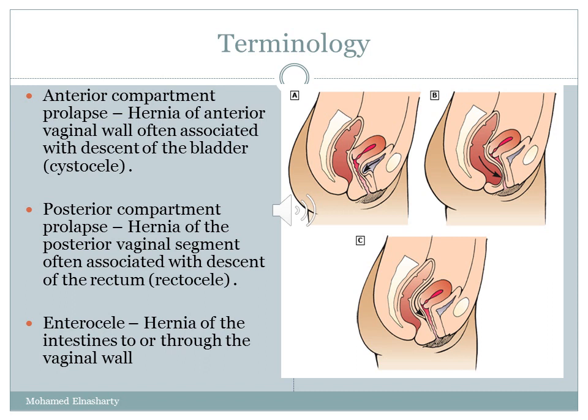Terminology is based on compartment. We have anterior compartment prolapse, posterior compartment prolapse, apical prolapse, and enterocele. Anterior compartment prolapse is herniation of the anterior vaginal wall, often associated with descent of the bladder, which we call a cystocele. Posterior compartment prolapse is herniation of the posterior vaginal segment, often associated with descent of the rectum, which we call a rectocele. Enterocele is herniation of the intestine to or through the vaginal wall, and apical prolapse is herniation of the vault of the vagina, common in patients who had a previous hysterectomy.